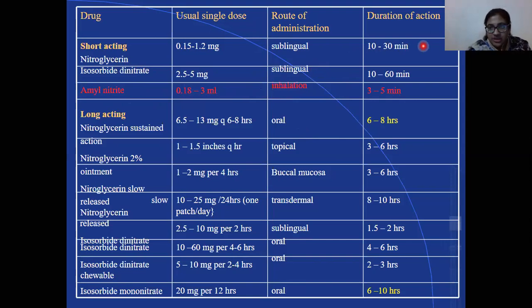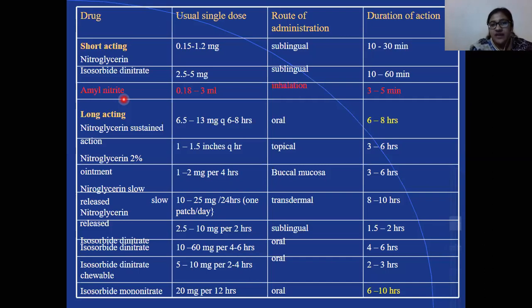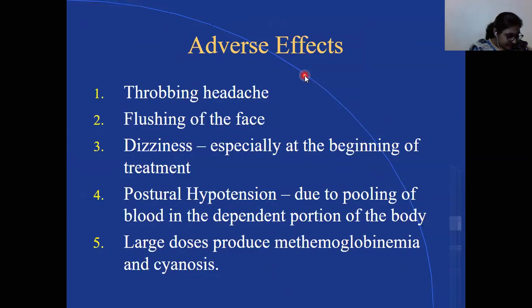Short-acting drugs are chosen when faster effects are needed. Nitroglycerin is chosen more frequently over amyl nitrate in hospitals because amyl nitrate has a very pungent taste, an unpleasant odor, and causes extensive cutaneous vasodilation — all of which make it less popular. Isosorbide dinitrate is given sublingually; more detail on this will follow.